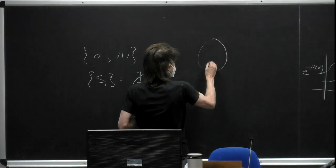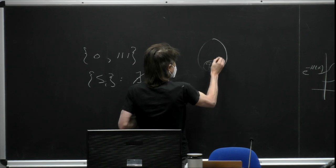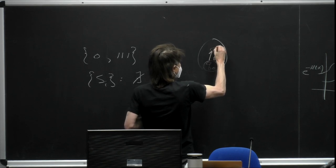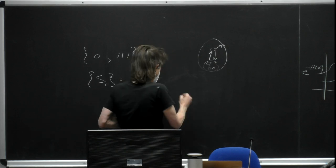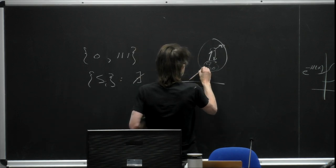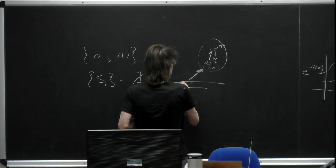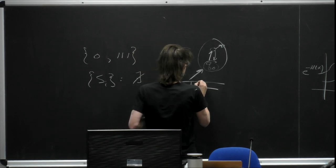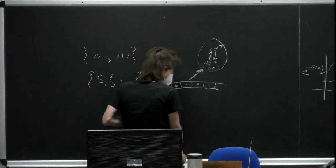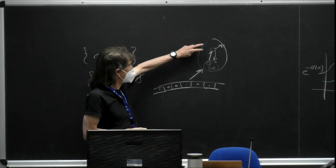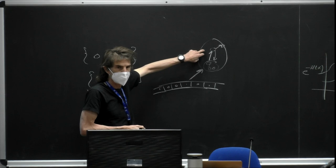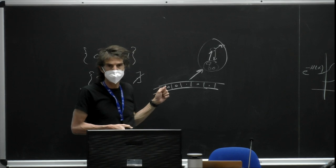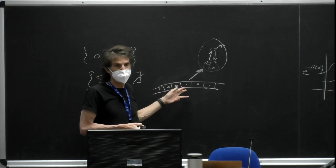Let's consider the case of a DFA. It has some initial state and it might have some final states — it has its internal states. It is being fed inputs from some bit string, some stream of bits. In this case, the DFA states are the system of interest — the accessible degrees of freedom — while the input word is the inaccessible degrees of freedom.